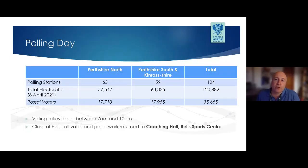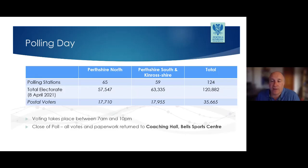On election day, polling will take place across our 124 polling stations in 87 polling places — 65 in Perthshire North and 59 in Perthshire South and Kinross-shire. The electorate as of 20th of April was 57,547 in Perthshire North and 63,335 in Perthshire South and Kinross-shire, and within those figures are 35,665 postal voters. The number of postal voters has increased by around 50% in the last three months. Voting takes place between 7 o'clock in the morning and 10 o'clock at night, and at the close of poll all votes, paperwork and equipment will be returned to the Count Centre at Bell Sports Centre.